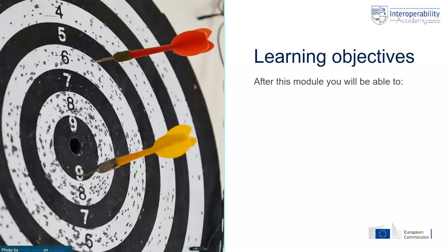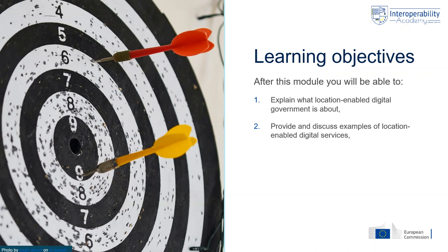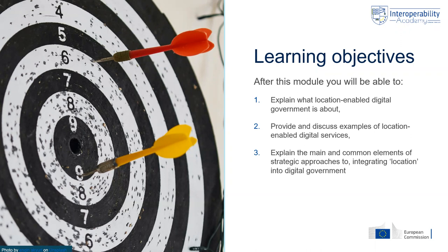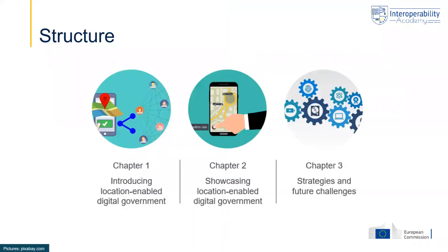In terms of learning objectives, after this module you will be able to: first, explain what location enabled digital government is about; second, provide and discuss examples of location enabled digital government services; third, explain the main and common elements of strategic approaches to integrating location into digital government; and fourth, identify and discuss the various key challenges in location enablement of digital government.